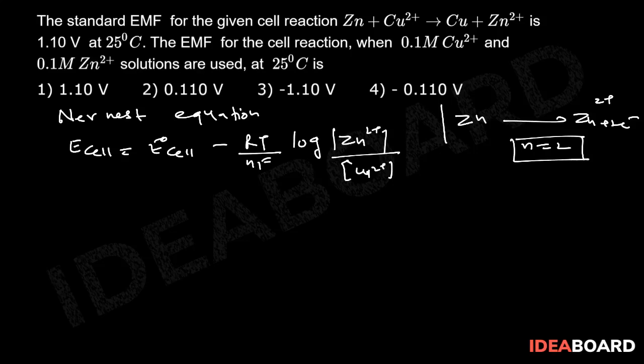E not cell value is given as 1.1, and at 25 degrees Celsius the value of RT by F is 0.0591, value of n is 2, and Zn²⁺ is given in the question as 0.1 molar and Cu²⁺ is also 0.1 molar, so this turns out to be 1.